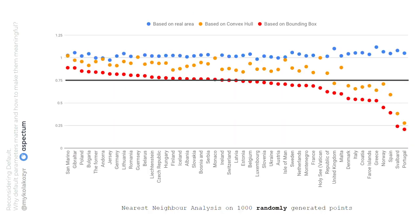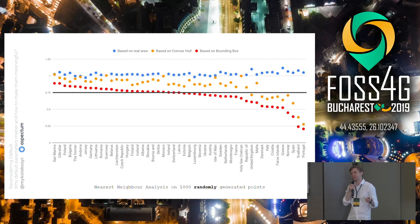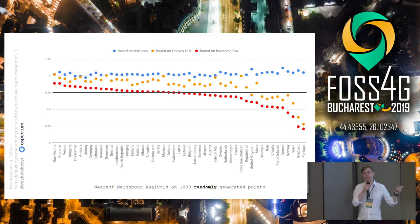Here is the nearest neighbor index for randomly distributed points. If they are randomly distributed, you expect the nearest neighbor index to be close to one, meaning features are randomly distributed. The blue points show that using the real area parameter confirms this hypothesis. But if you use other default parameters, you may even get a change in distribution type — for all these features having randomly distributed points within the territory, you would get a result showing clustering distribution. That's a completely different result. I believe in this case it's better not to use the analysis at all, because you get extremely different results — it's not about small changes, it's about a completely different distribution type.